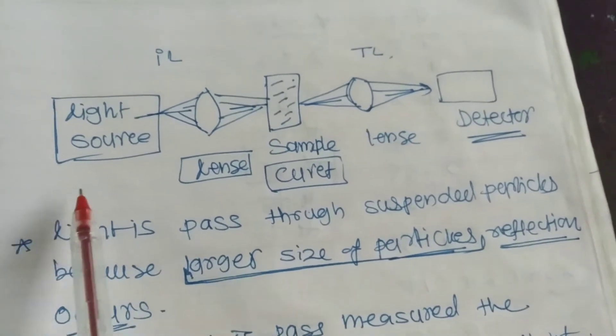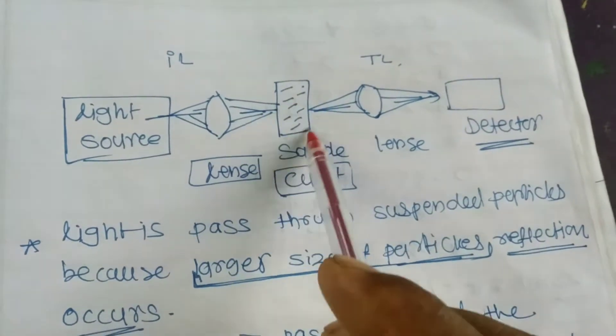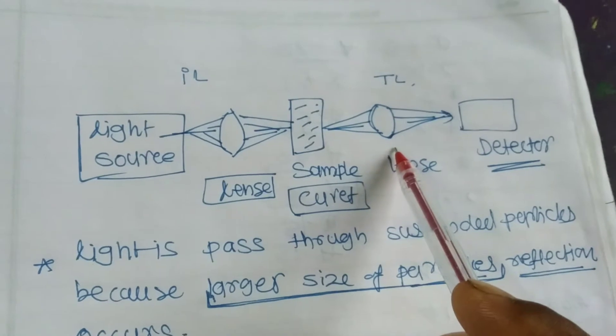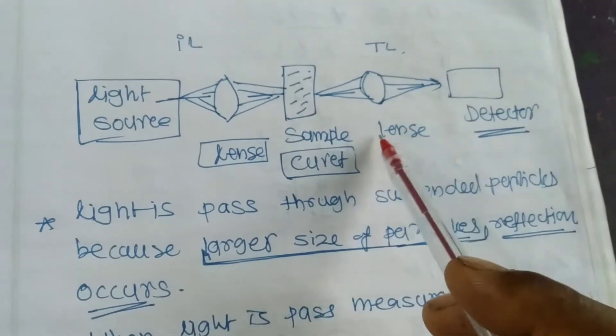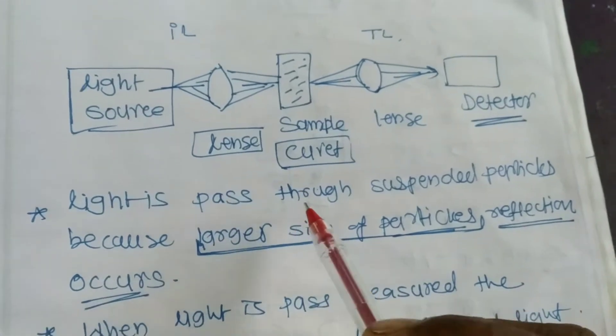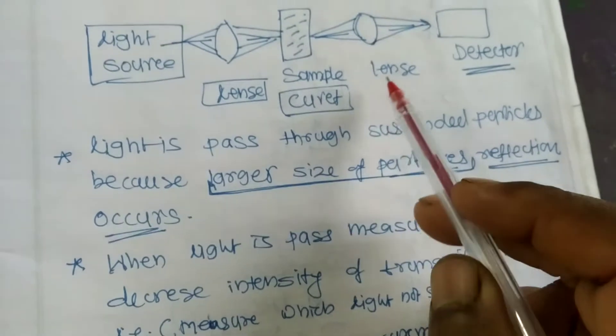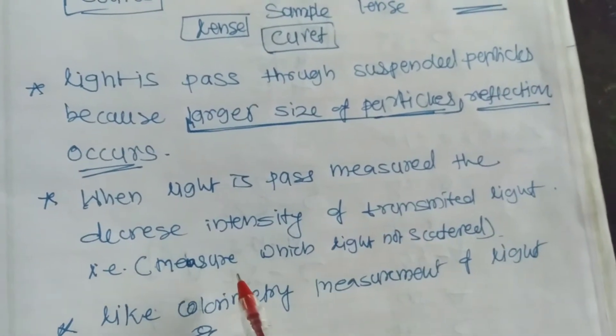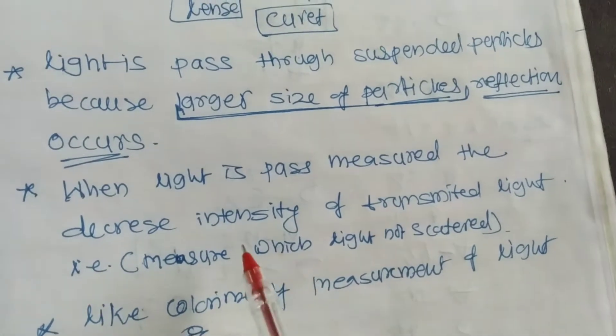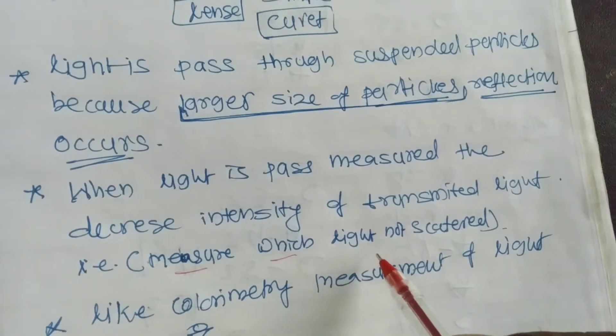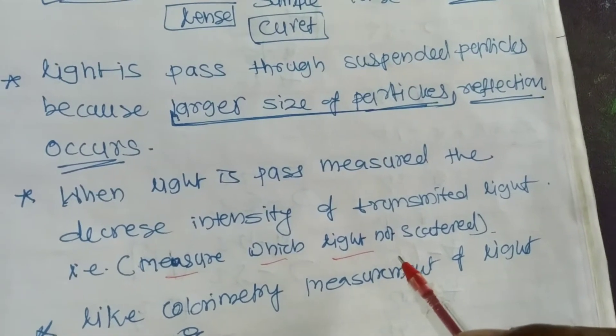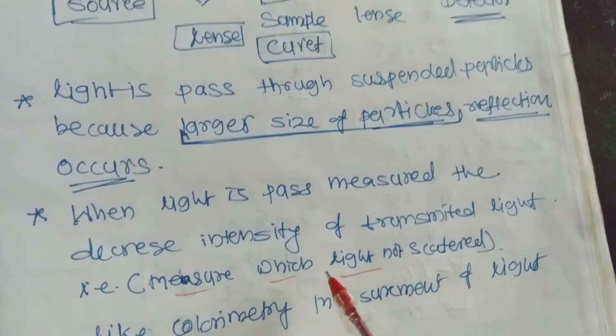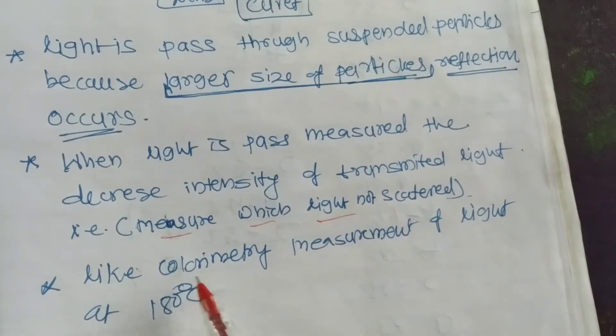If a beam of light is passed through a turbid sample, the intensity is reduced. We get decreased intensity of transmitted light. This decreased intensity is measured, which is equal to the concentration of the turbid solution. Decreased intensity is directly proportional to the turbidity of the substances. Like colorimetry, the measurement of light is at 180 degrees.